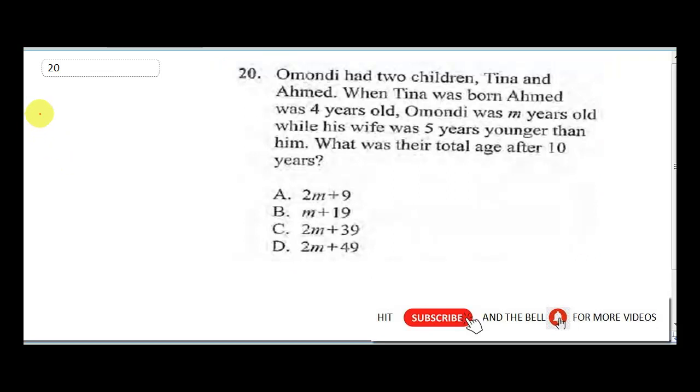Okay, so let's take down the data first. He said when Tina was born, Ahmed was four years old. But Omandi himself was m years old. Because he's asking us the question, what was their total age after 10 years? So let's say this is for now and this is after 10 years.